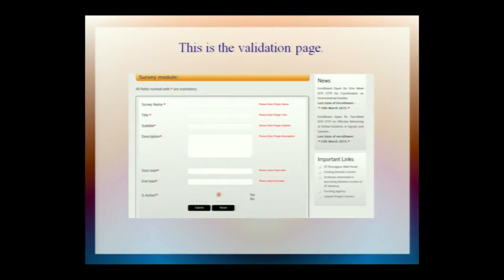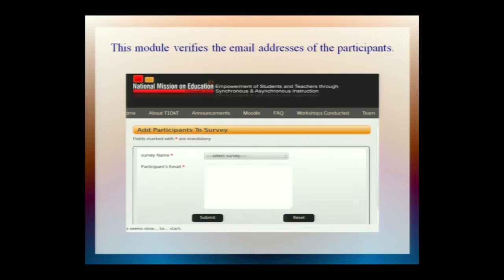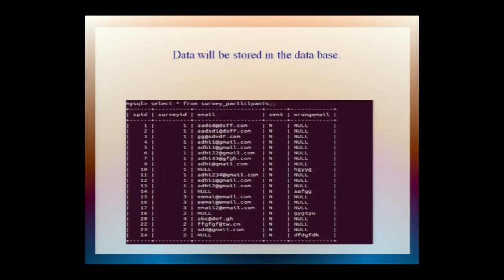For example, 'Please enter the survey name.' If the user resets, the survey name should be unique. This is the validation form. You also use the IsActive field; if IsActive value is zero, data should still be stored. This is the email link for survey participants. A list of emails will be stored in the participant's email list, separated by a split function. All emails are stored in the database — correct emails in one database, wrong emails in another. The database contains Survey ID and SPID. Survey ID identifies the survey, and SPID is the survey participant ID, which is an auto-increment value. The email link is sent to the participant's correct email ID; wrong email IDs go into a separate database.